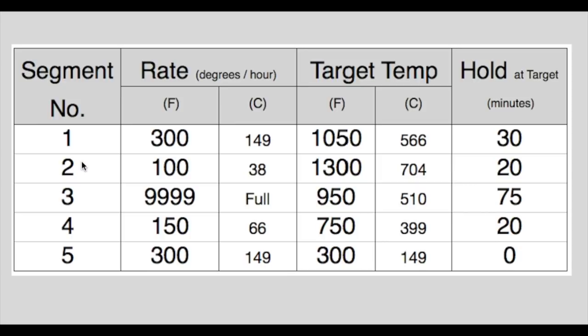In segment 2 we want the kiln to ramp at a rate of 100 degrees per hour until it reaches 1300 degrees and then hold there for 20 minutes before moving on to segment 3.